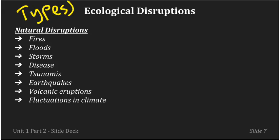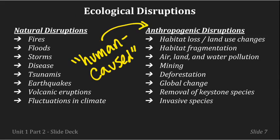Here are a couple of different types of ecological disruptions. The natural ones include fires, floods, storms, disease, tsunamis, earthquakes, volcanic eruptions, and those natural fluctuations in climate. Then we've got the anthropogenic disruptions — these human-caused disruptions.